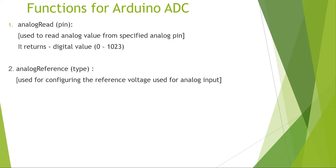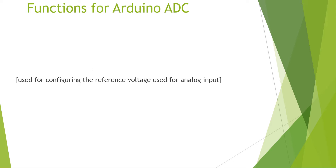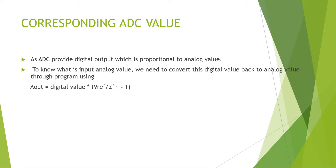After getting the digital value, we may also want to convert back to the corresponding analog value using mathematics. The ADC provides a digital output proportional to the analog value. To find the input analog value, we convert the digital value back using the formula: analog output equals digital value multiplied by V_ref divided by (2 to the power n minus 1), where n is the number of bits.